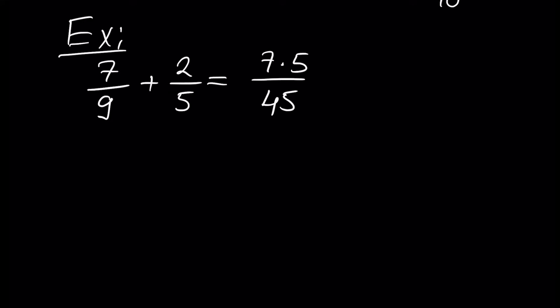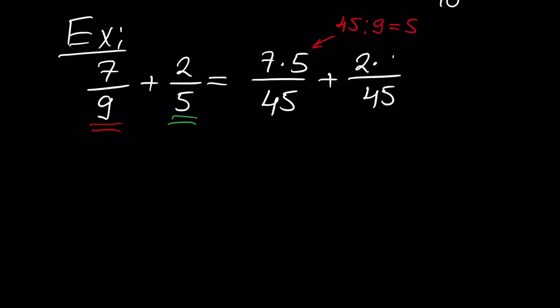Why 5? Because 45 divided by 9 gives us 5. Plus 45, and since 45 divided by 5 is 9, we multiply 2 times 9.